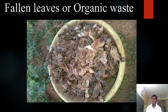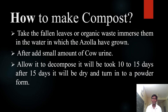The fallen leaves are like this. How to make compost: take the fallen leaves or organic waste, immerse them in the water in which Azolla has grown, then add a small amount of cow urine. Allow it to decompose — it will take 10 to 15 days. After 15 days it will dry and turn into a powder form.